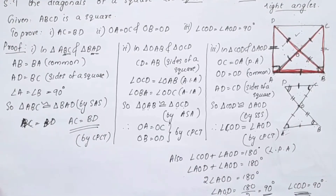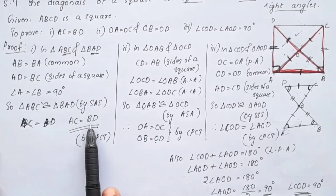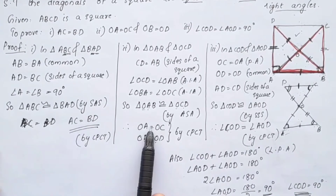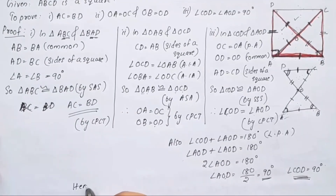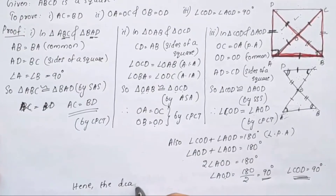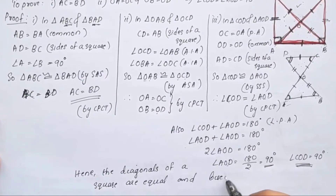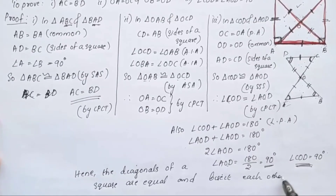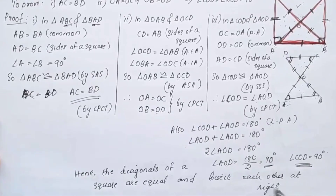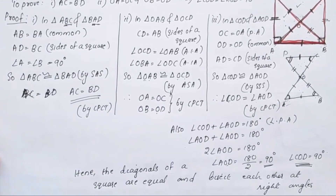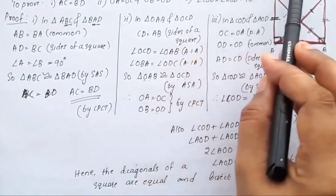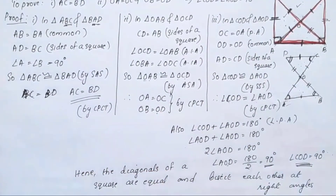By ASA, we get: OA is equal to OC, OB is equal to OD, and AC is equal to BD. The diagonals are equal and bisect each other at right angles. Hence, the diagonals of a square are equal and bisect each other at right angles. These are the three things we needed to prove.